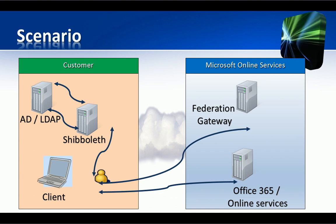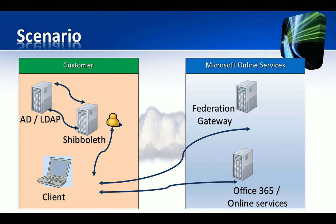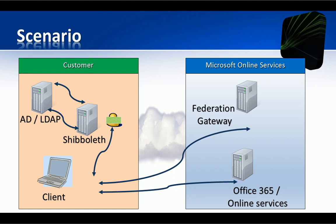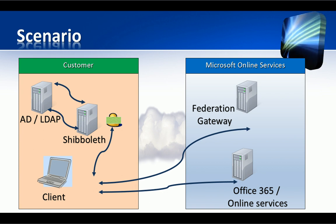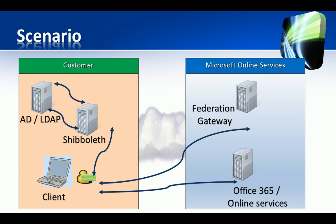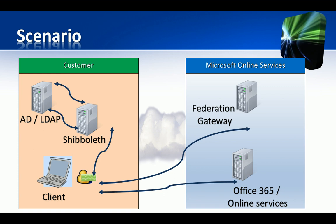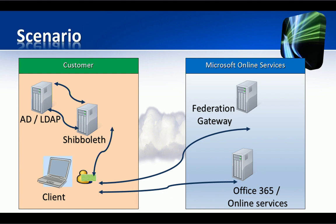Shibboleth delegates the authentication to the directory service like Active Directory or LDAP, and once the user is authenticated it builds the assertion containing the attributes that the Federation gateway requested. The two attributes that Shibboleth passes within the assertions to the Microsoft Federation gateway are the UPN, the user principal name,